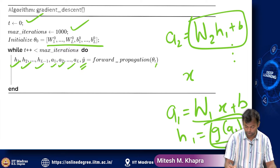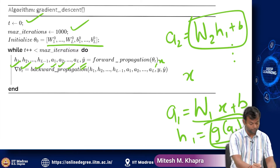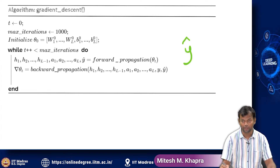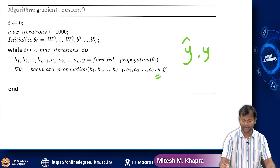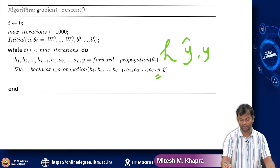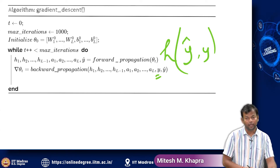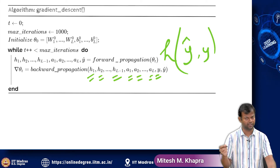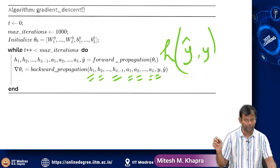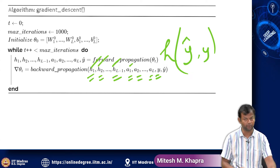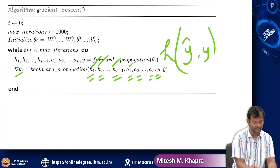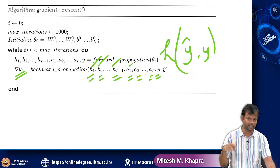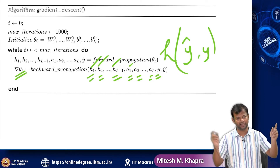You will do a forward propagation on the input x. Once you have done the forward propagation, you do the backward propagation. You compute y-hat, and you also know y. Using that you can compute the loss function, which depends on y-hat and y. You will need all of these things — they show up in the backpropagation formula. Everything computed in the forward propagation is needed in the backward propagation as well. The output of backward propagation is the derivative of the loss function with respect to all the weights, collectively called derivative with respect to theta.